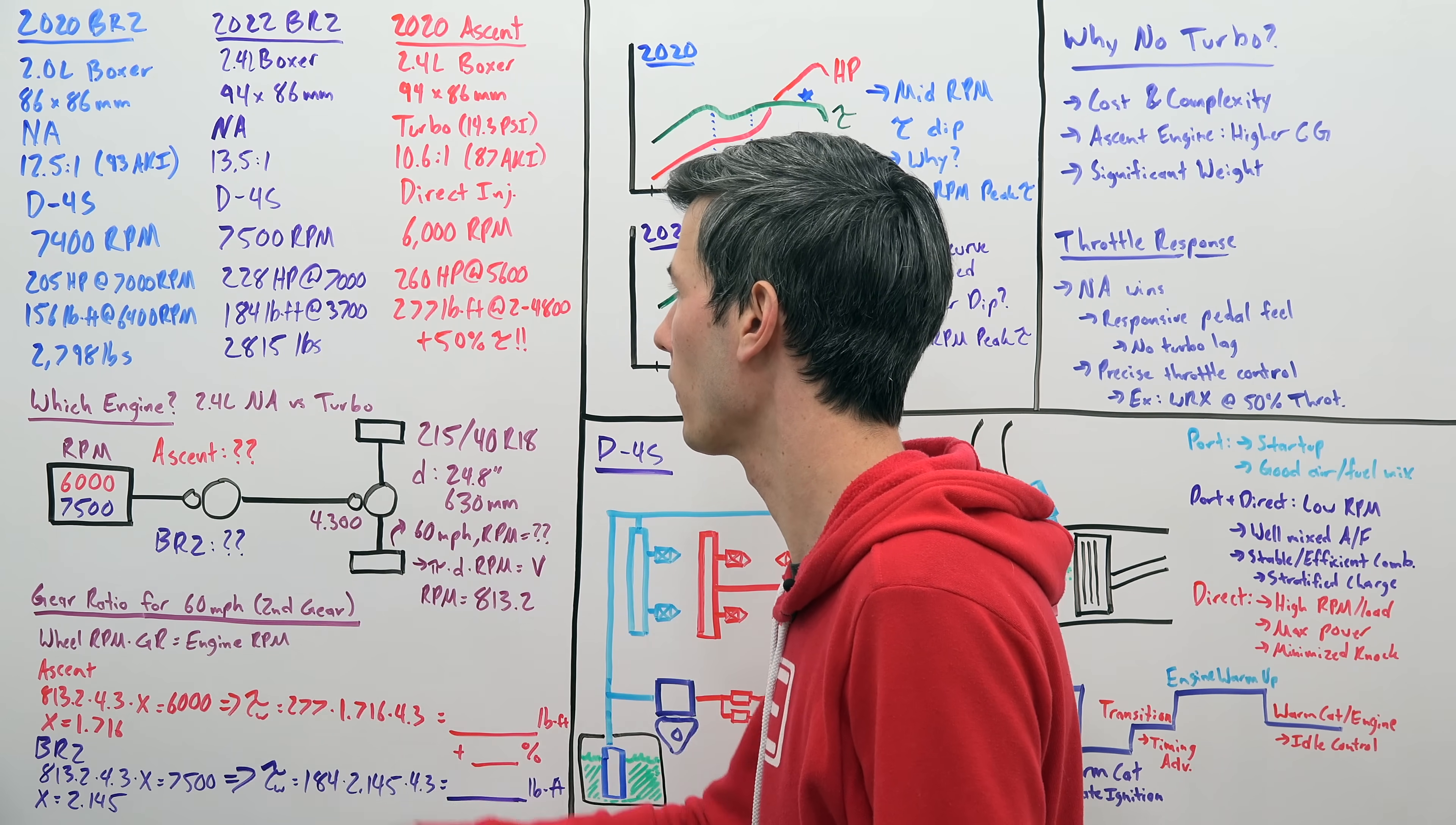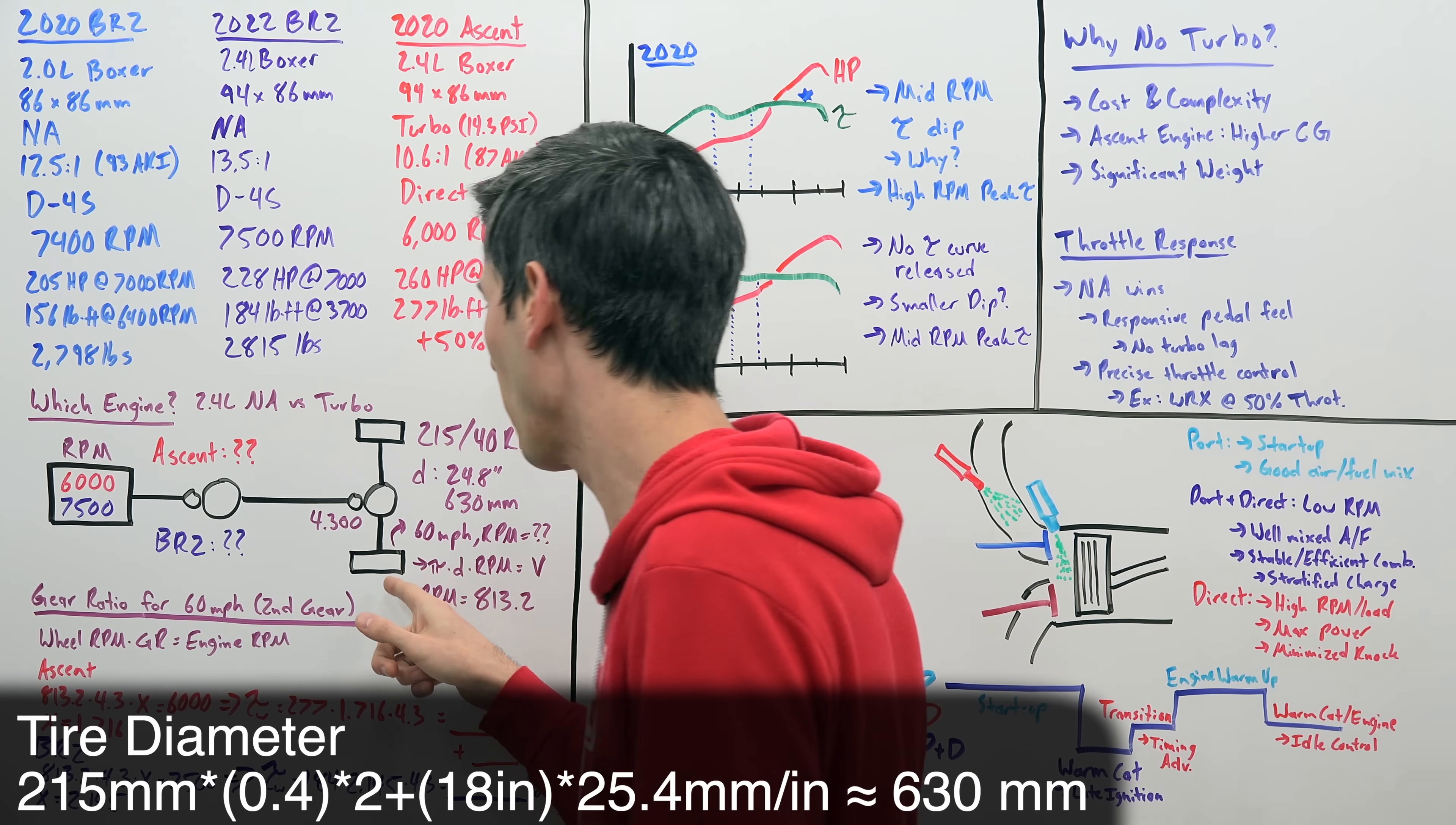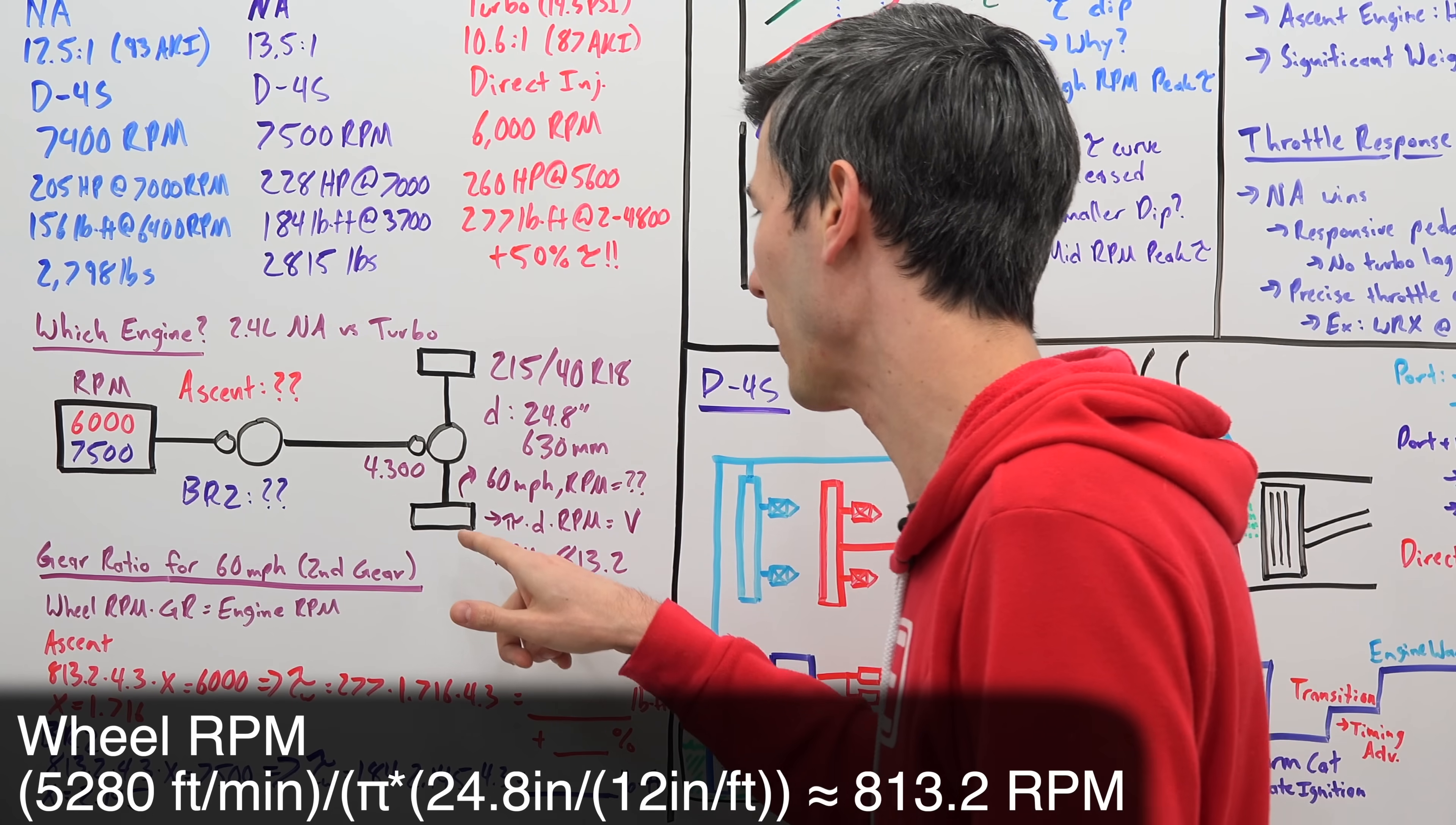Here's our two engines. One of them has a 6,000 RPM redline. One of them has a 7,500 RPM redline, trying to figure out second gear. We know our final drive ratio is 4.3. And we know our wheels are sized, our tire size is 215 over 40 or 18. So we can calculate the diameter from that. Gives us 24.8 inches or about 630 millimeters. And so now we're trying to figure out if we're traveling 60 miles per hour, what is our wheel RPM? So 60 miles per hour, one mile per minute. We can figure out our RPM by multiplying the circumference of the tire, pi times its diameter, multiply that by RPM. And that will give us our velocity. So we can do the math and our RPM turns out to be 813.2 RPM. That's our wheel RPM.